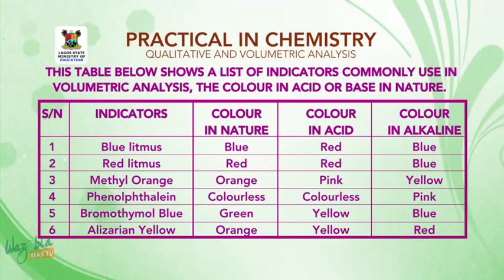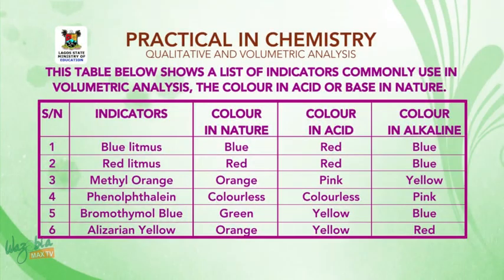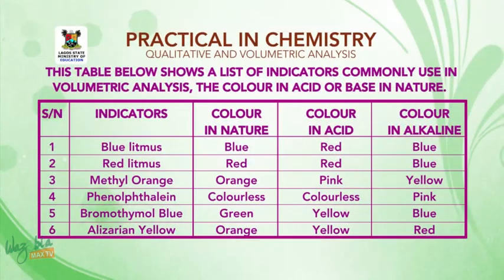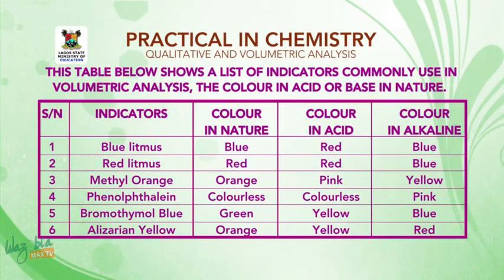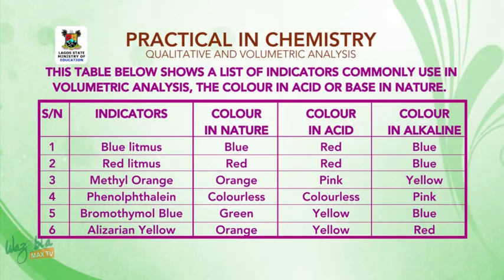Blue litmus is blue in nature; in acid solution it is red, and in alkaline the color is blue. Red litmus is red in nature; in acid it is equally red, and in alkaline it is blue. Methyl orange is orange in nature, pink in acid, and yellow in the alkaline medium. Phenolphthalein is colorless in nature, colorless in acid, and pink in alkaline.